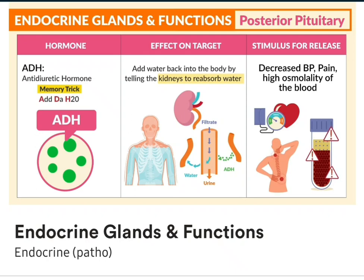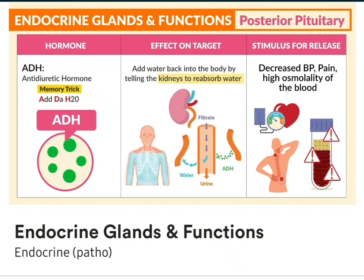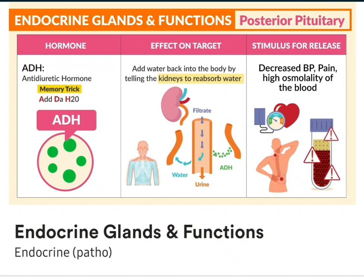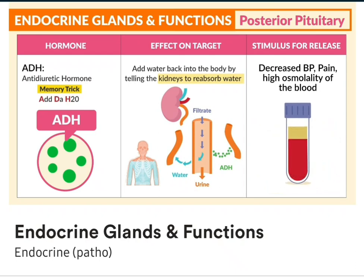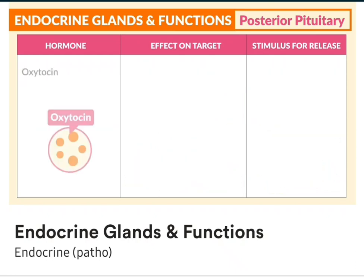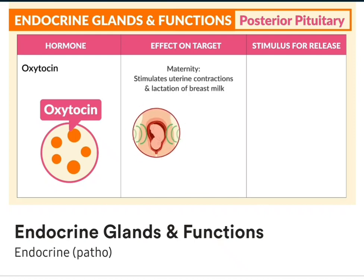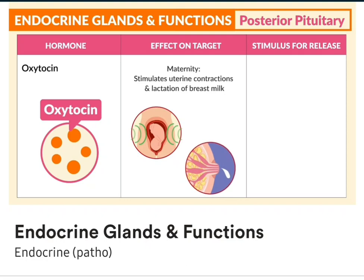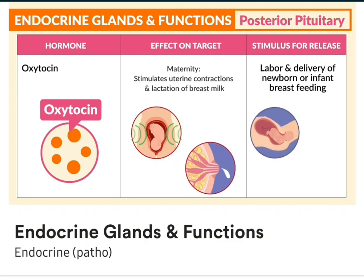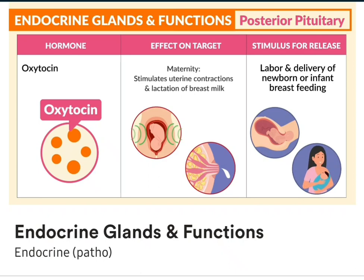Basically, really thick blood. So we need to add more water back to the body to dilute that thick blood. Now lastly, we have oxytocin. The effect on the target is maternity — it stimulates uterine contractions and lactation of breast milk. Its stimulus for release is labor and delivery of a newborn or an infant that is breastfeeding.